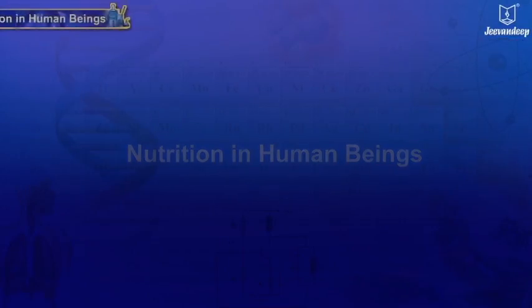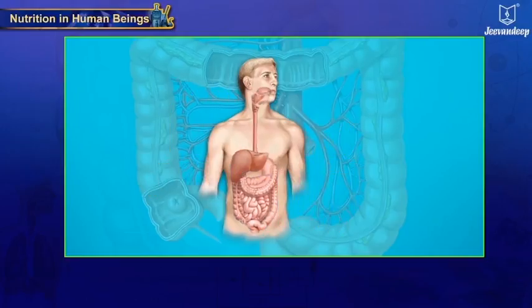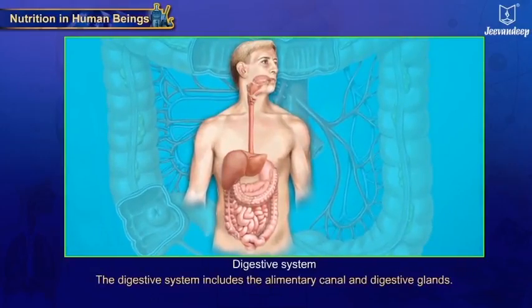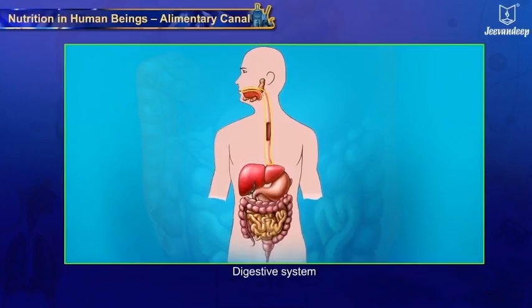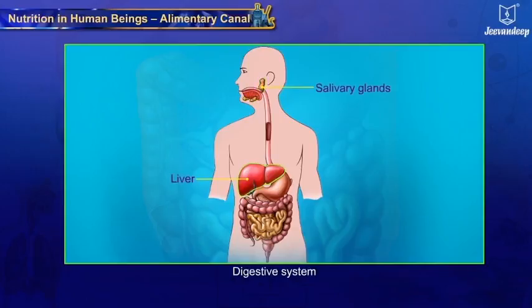Nutrition in human beings: the intake of food, digestion, absorption, and associated processes take place with the help of specific organs. These organs constitute the digestive system and include the alimentary canal and digestive glands. The alimentary canal is a long muscular tube starting with the mouth and includes the esophagus, stomach, small intestine, large intestine, and anus. It also includes digestive glands such as salivary glands, liver, pancreas, and gastric glands.